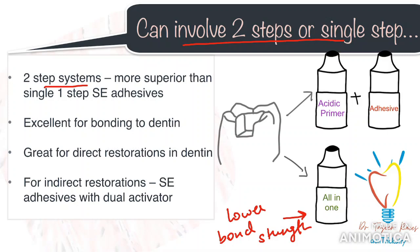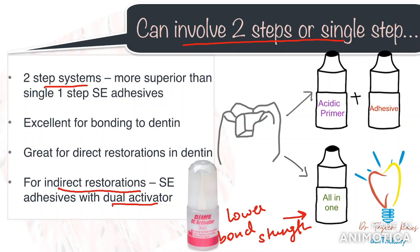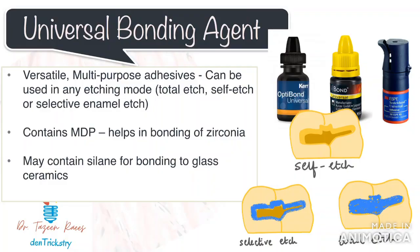One common question with self-etched systems is whether they can be used for indirect restorations. Most self-etched adhesives are light-cure ones, but dual-cure activators are available. Using these dual-cure activators, you can definitely use self-etched systems for indirect restorations. Having said that, the preferred option when using self-etched adhesive is to at least selectively etch the enamel surface to enhance the enamel bond.